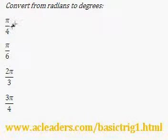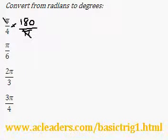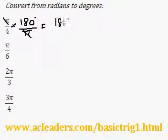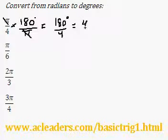So let's give it a try. We multiply by 180 degrees over pi — the pi's cancel out — and 180 degrees over 4 will be 45 degrees, because 180 divided by 4 is 45. That's it.